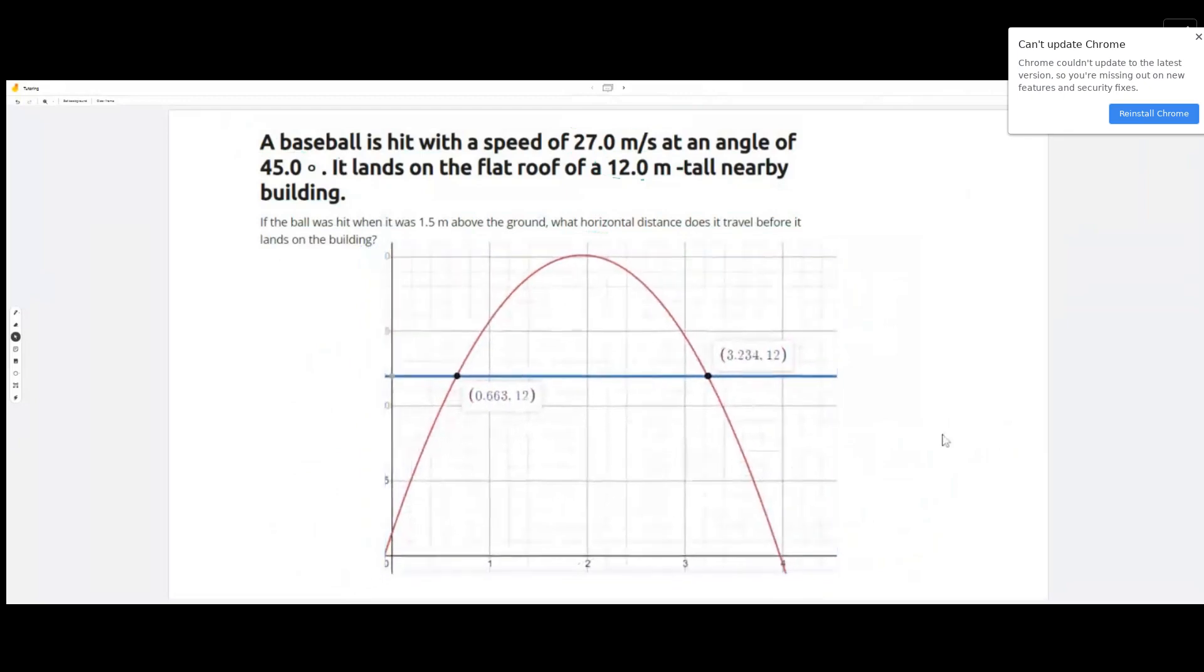Here we have a diagram that represents the vertical position or the y position of the baseball as it travels through the air.